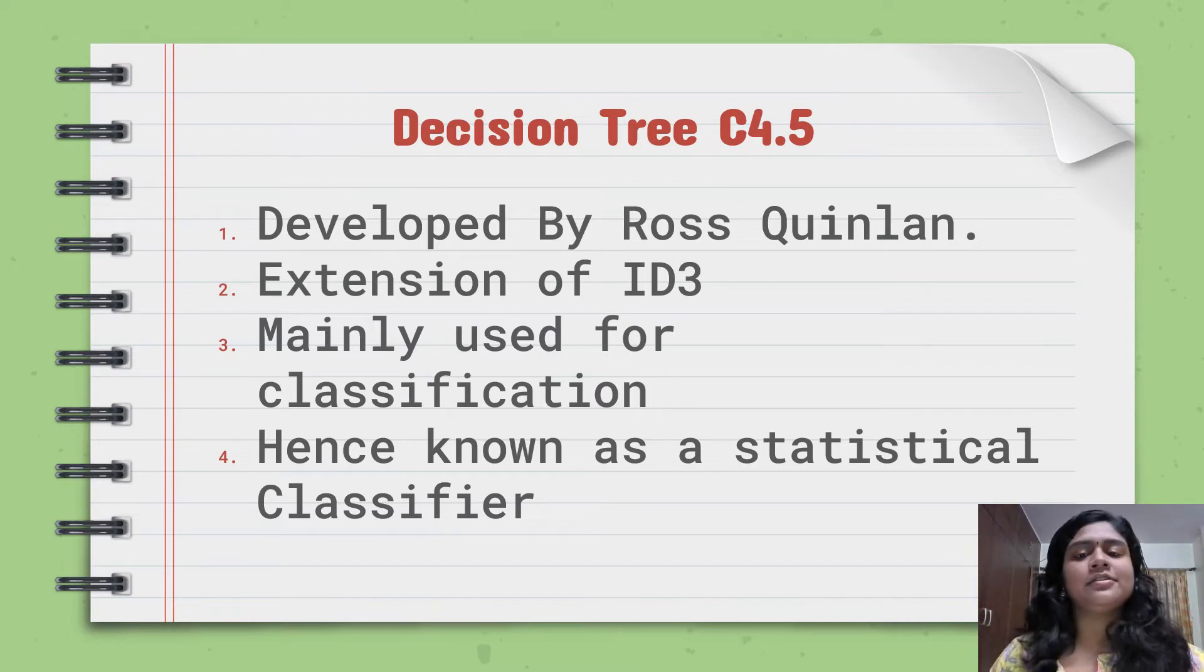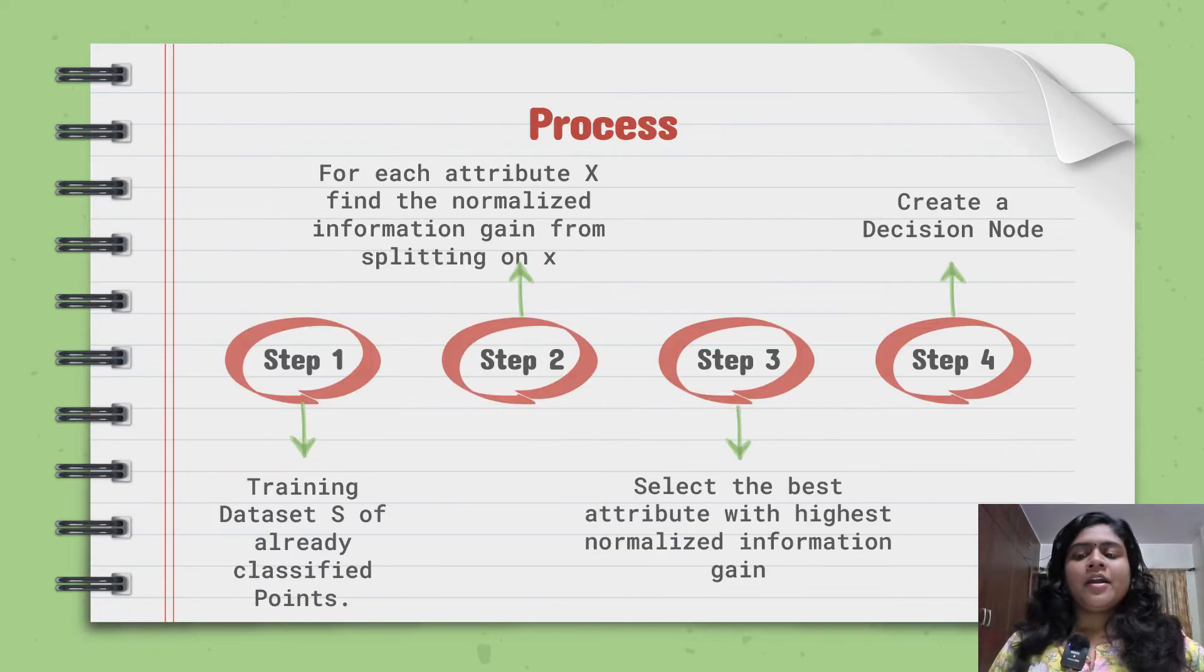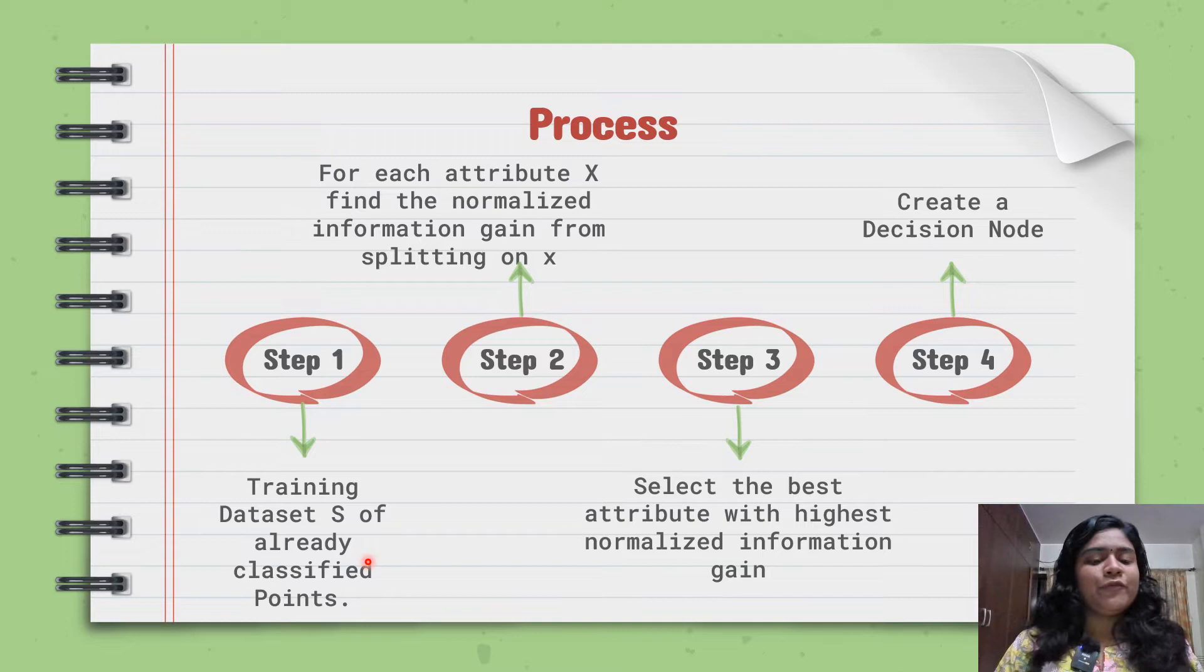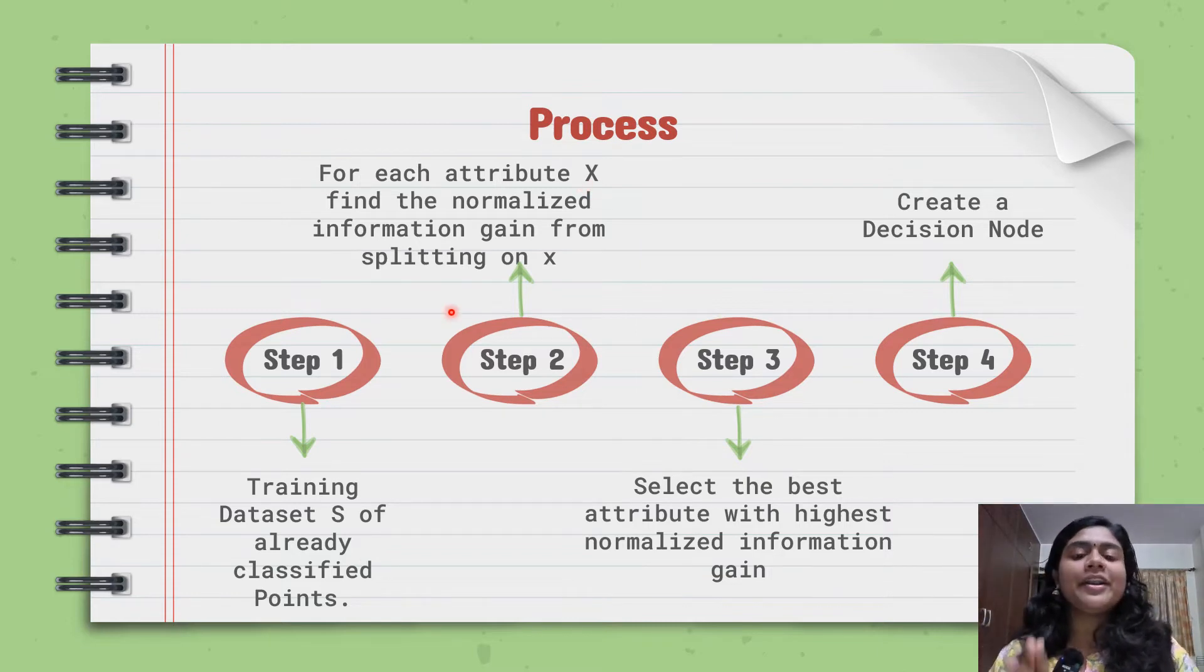Now we look at the process of C4.5 and see how C4.5 is different from ID3. The first step is we already have a data set, that is the training data set S, which is classified. Next, for each attribute X, find the normalized information gain from splitting on X.